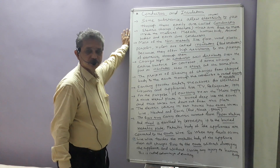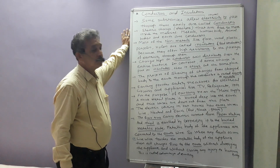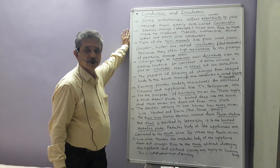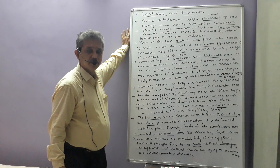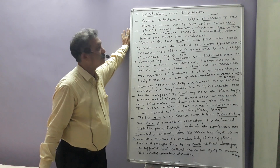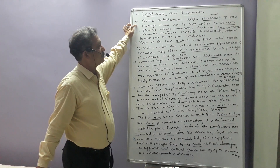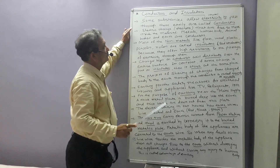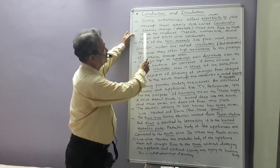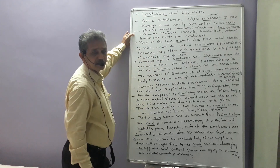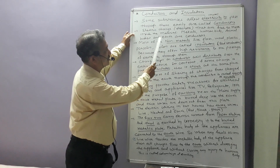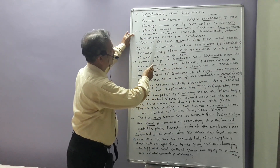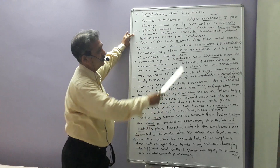What is the definition of conductors? Substances which allow electrical charges or electricity to pass through them easily are known as conductors. They are called conductors because they have electric charges like electrons that are free to move inside the material. Metallic substances, the human body, animal bodies, and the earth are good conductors.